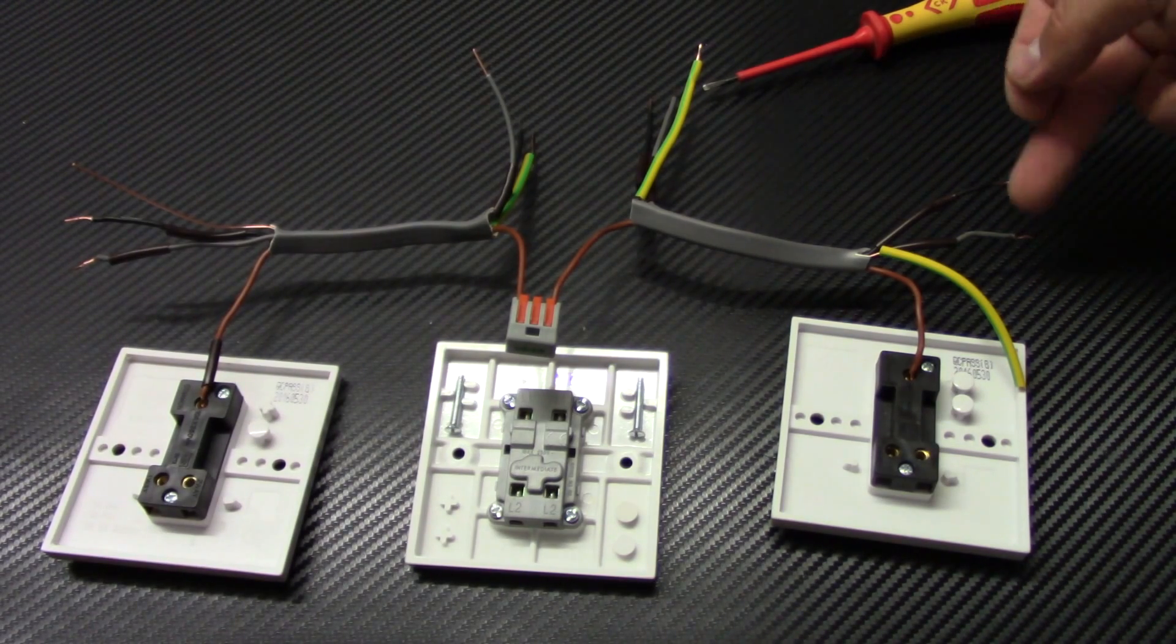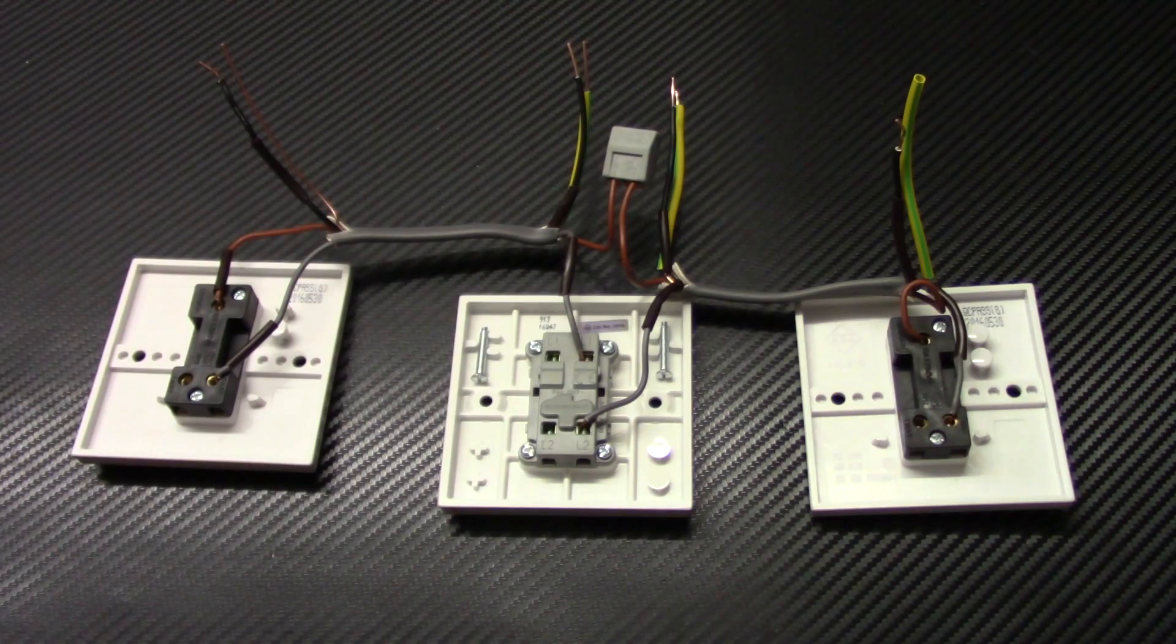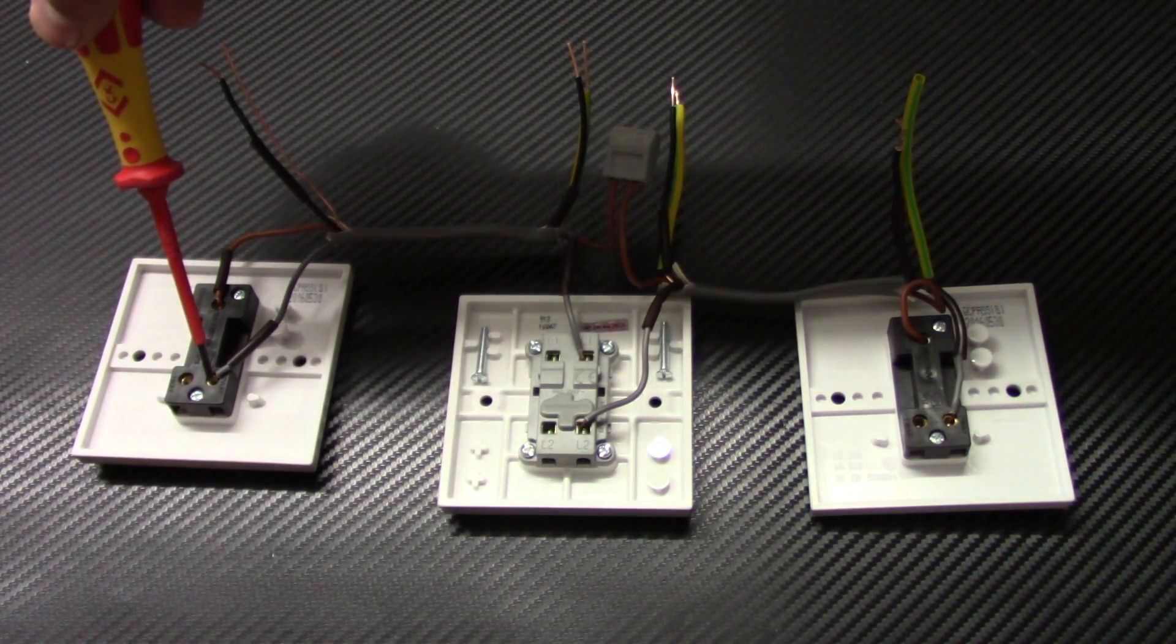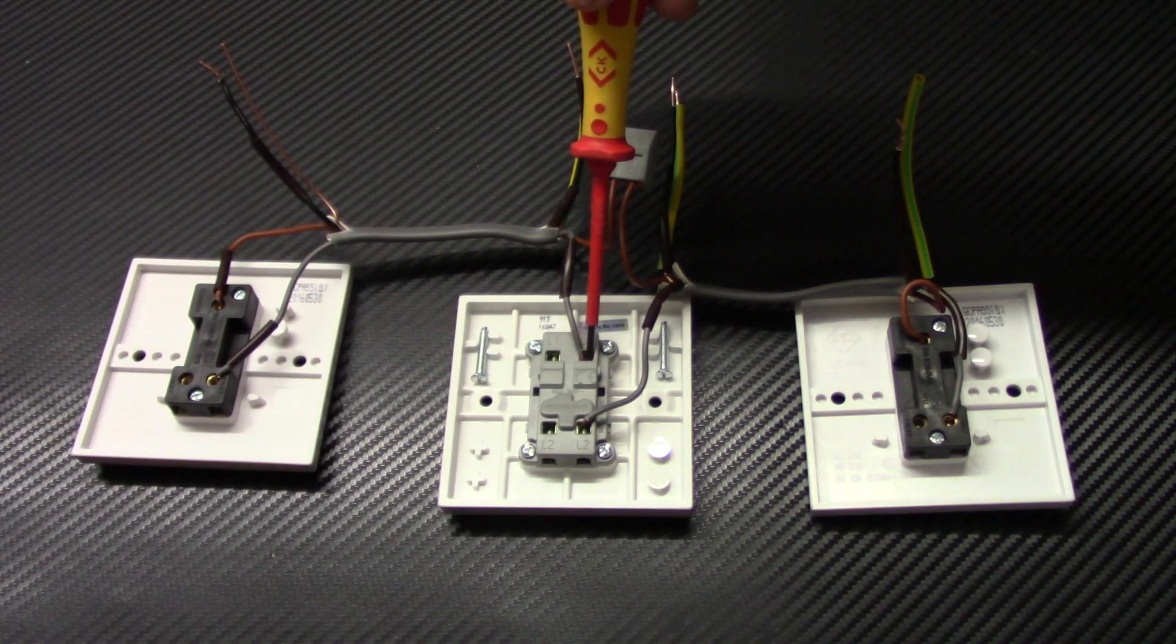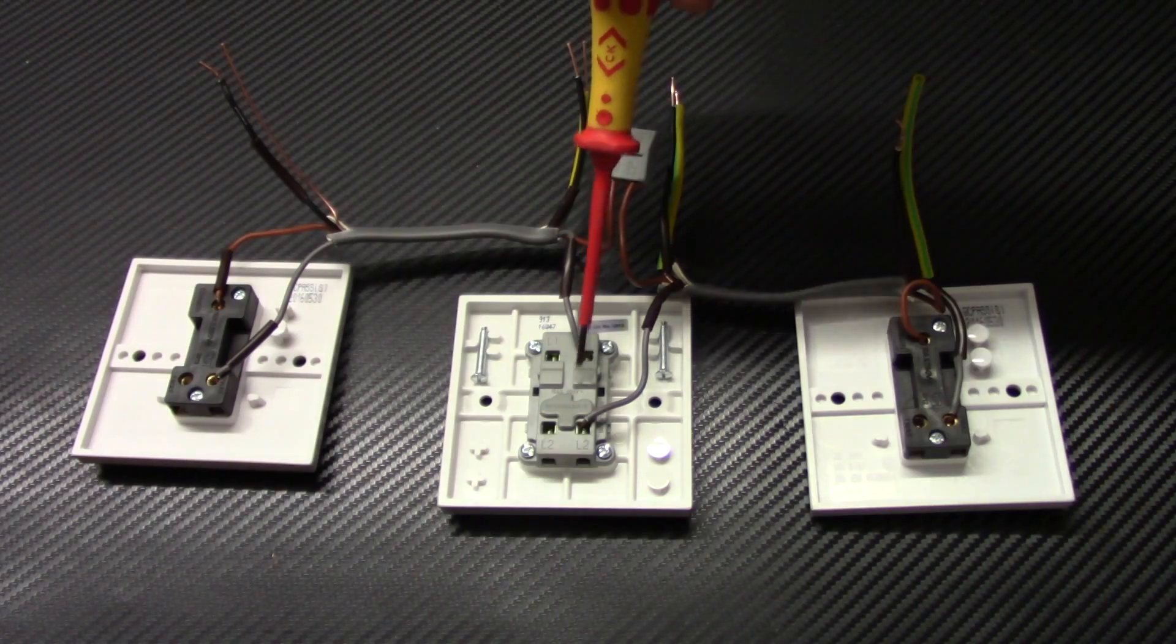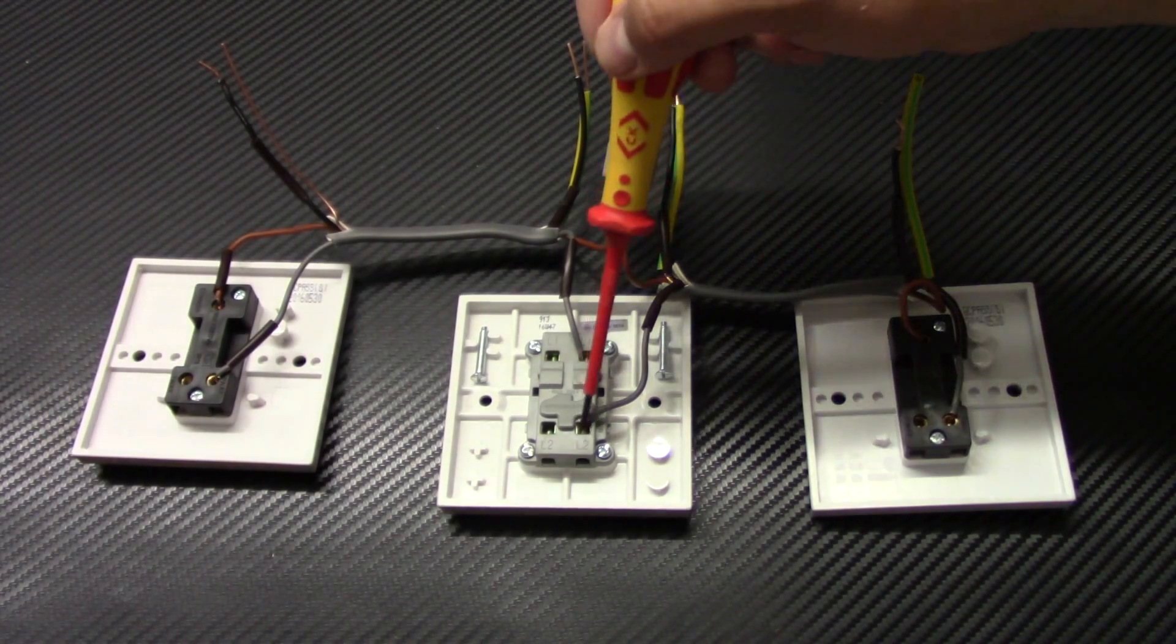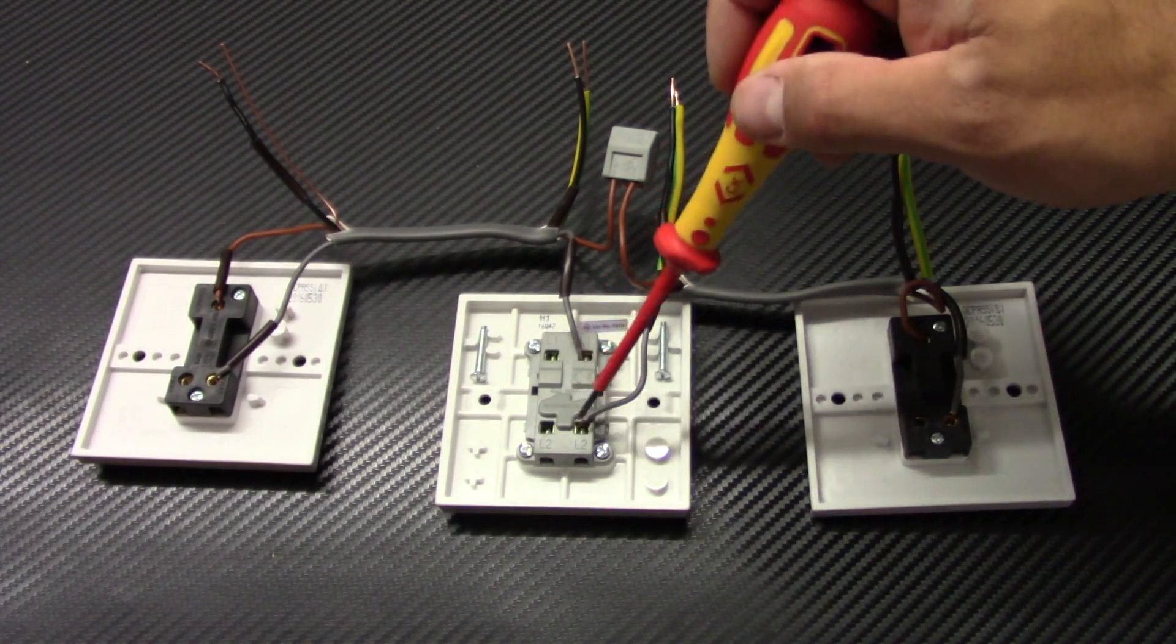Now let's do the grey wire. From the first switch the grey wire is connected to L2 terminal. Then intermediate switch L1 terminal. And then I connected the grey wire opposite on the L2. And from this one is connected to the L2 as well. So L2, L2, L1, L2. This has to be opposite.